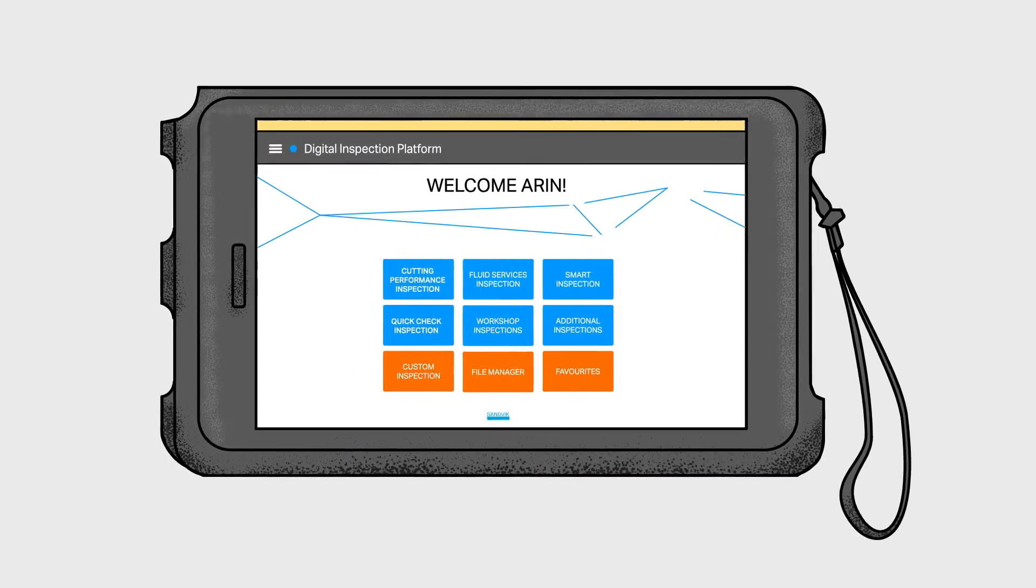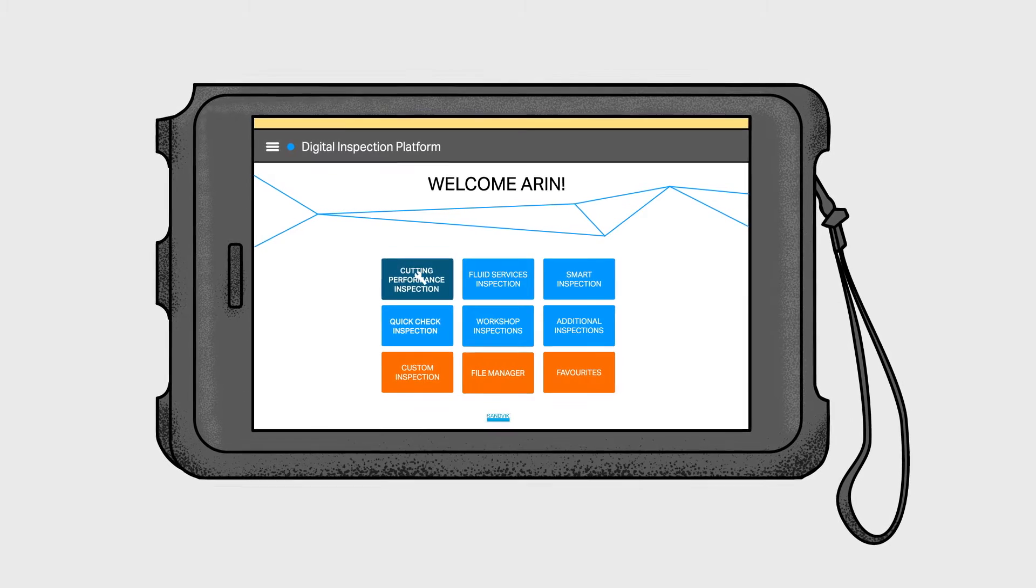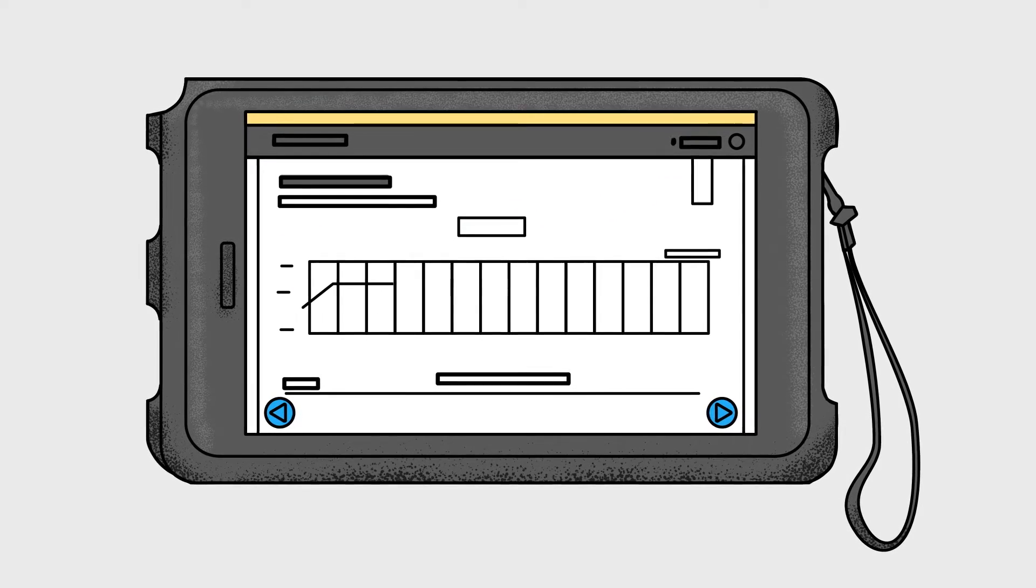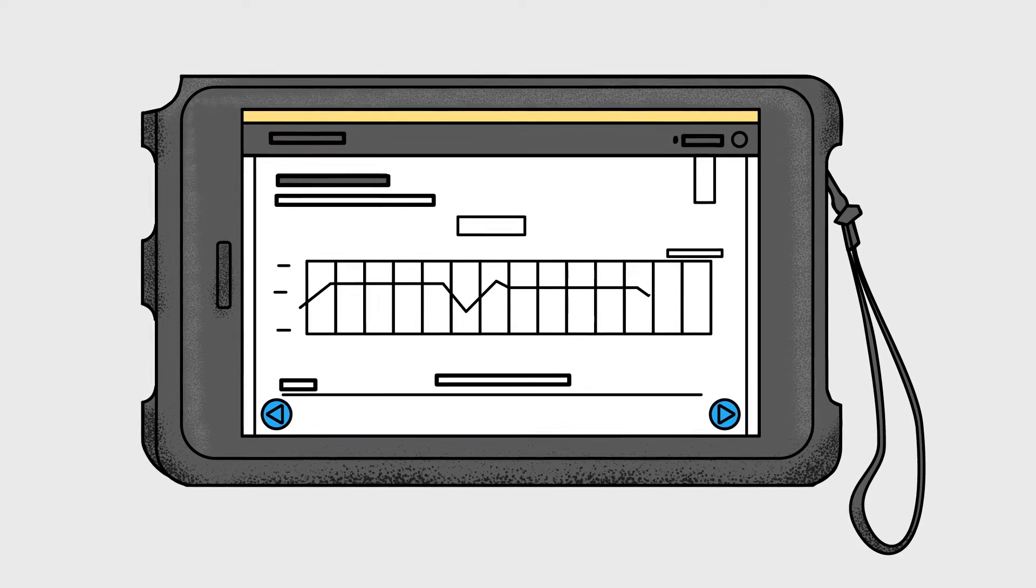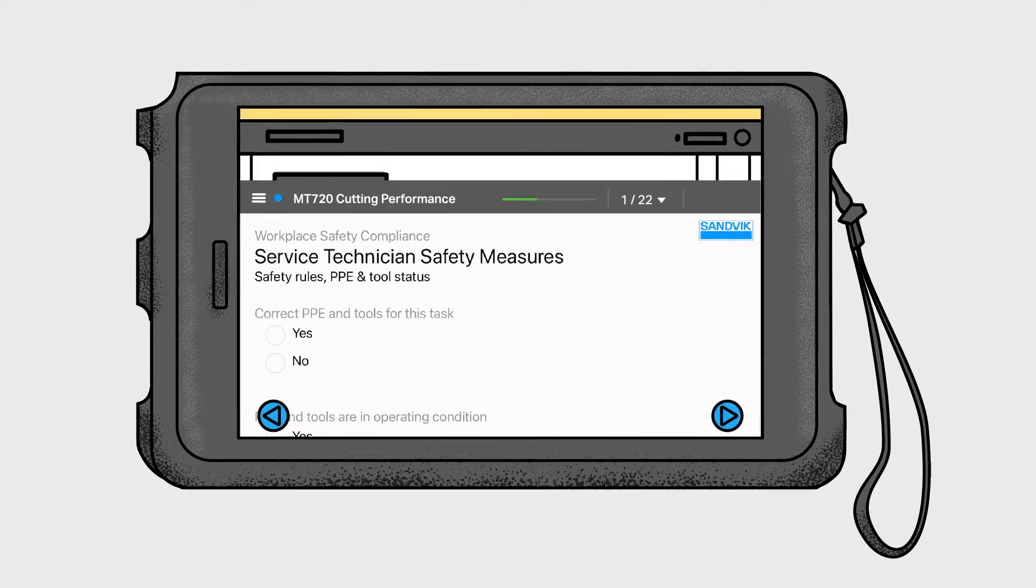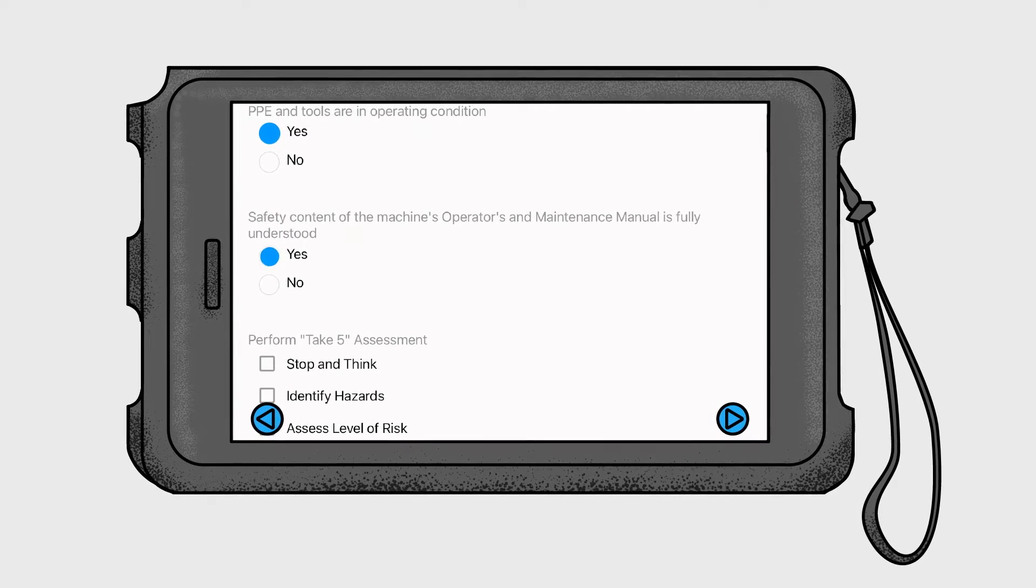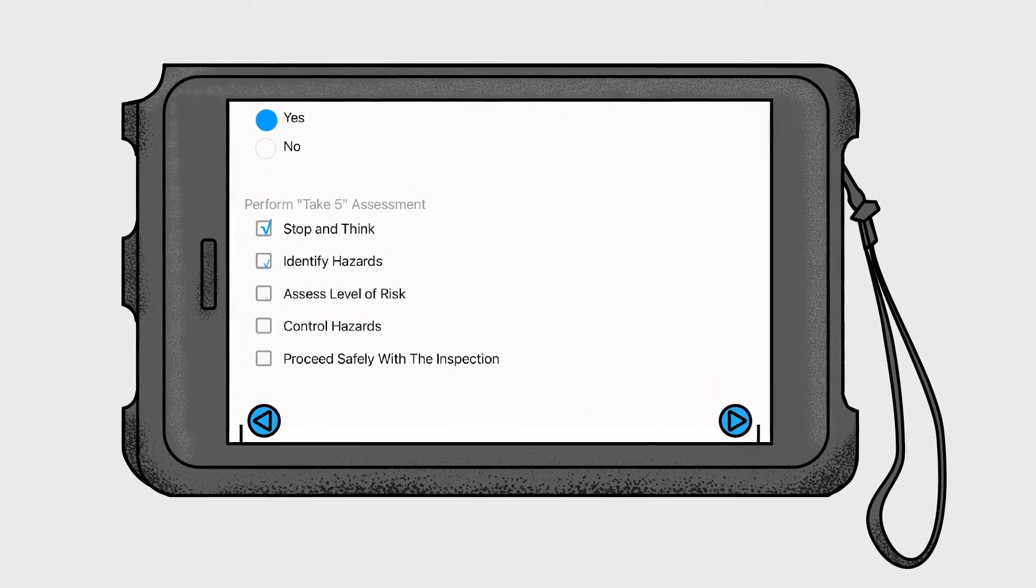These insights are shared with you on Smartmate within Sandvik MyFleet's online portal. There you can find compelling dashboards with the ability to sort and filter aggregated information. Furthermore, you will get alerts and notifications about abnormalities which are not in line with your KPIs.